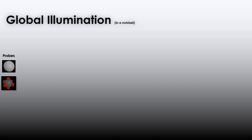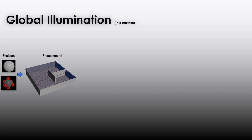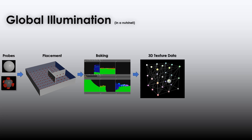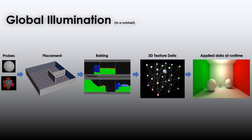As a quick refresher, current techniques to achieve real-time global illumination involve placing light probes. A light probe is essentially a point in space with a six-camera setup. These light probes are placed all over the environment. Radiance data is then baked into a texture from each light probe, which generates a 3D texture data grid. This data grid is then used at runtime to produce a dynamic global illumination effect.